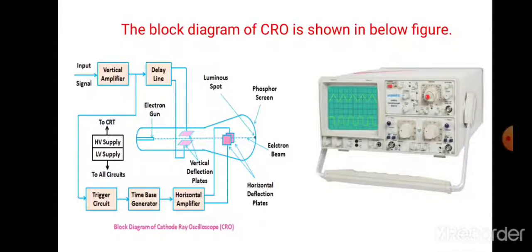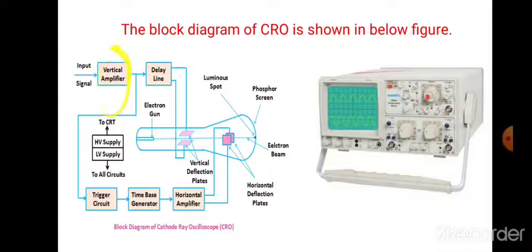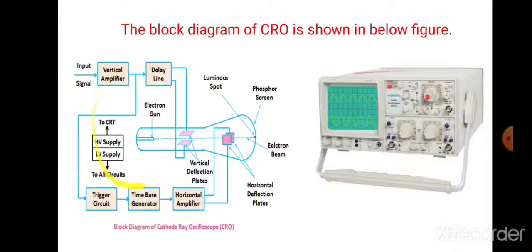Look at this figure. The block diagram of cathode ray oscilloscope — this is the physical instrument available in the laboratory. Inside, how the cathode ray oscilloscope is built? The components inside are: vertical amplifier, delay line, trigger circuit, time-based generator, horizontal amplifier, and cathode ray tube. The cathode ray tube consists of the screen, and overall power supply for this system.